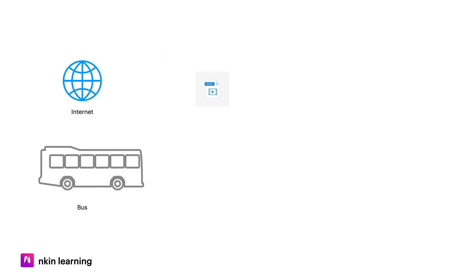In the first method, we need to increase the size of the file. In the second method, we don't need to change the size of the file. If it is 1TB or 2TB, we need to transfer the file. We need to calculate the efficiency of that algorithm, and we can analyze it at the same time. This is the concept of time complexity.